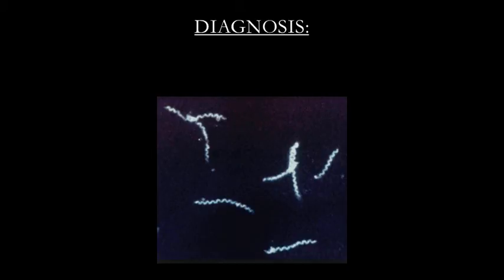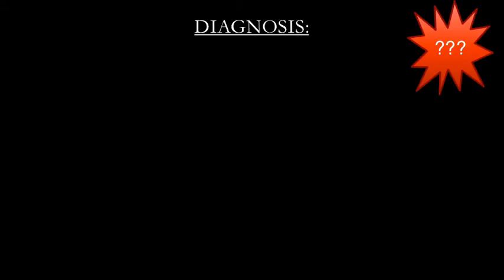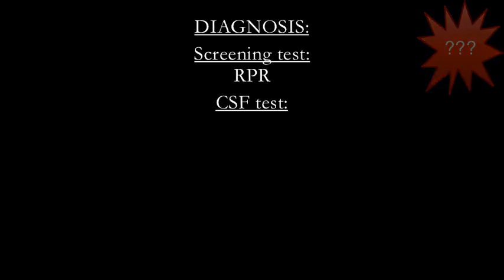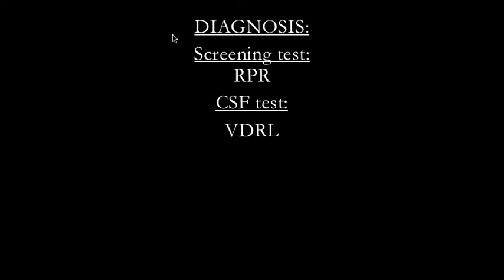For diagnosis, you can use dark field microscopy by scraping a sample from a primary or secondary syphilis lesion, though this is rarely done in practice. Most of the time you'll use serologic tests looking for antibodies. The initial screening test is a Rapid Plasma Reagin or RPR. Be aware this test has many causes of false positives. In the CSF, a different marker is used: the VDRL, or Venereal Disease Research Laboratory test. Both can have false positive results and are used for screening.